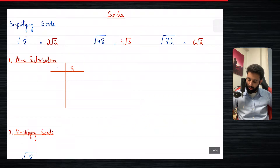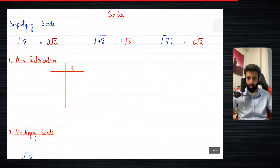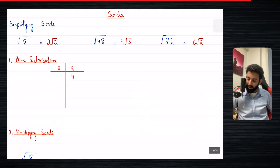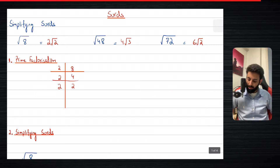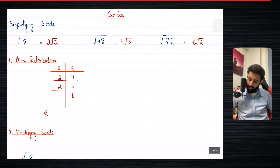So let's write down eight. Eight can be written as follows — when we say prime factorization, we start dividing the number by the smallest prime number possible. So it can be divided by two; if it's an even number, you have to start with two. So two fours, and then four again can be divided by two — two twos — and then two again can also be divided by two. So two ones are two. It can basically be written as two times two times two.